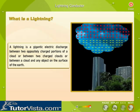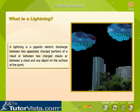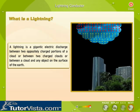Lightning is a gigantic electric discharge between two oppositely charged portions of a cloud, or between two charged clouds, or between a cloud and any object on the surface of the earth. Let's first see how a cloud gets charged.